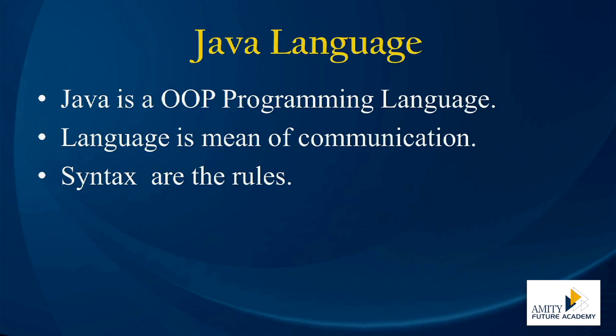What type of language is Java? Java is a programming language. In programming languages, there are many different kinds and different categories. One of the categories is called object-oriented programming. So, we will say Java is an object-oriented programming language. Object-oriented programming is nothing but a methodology which defines how to develop a program.